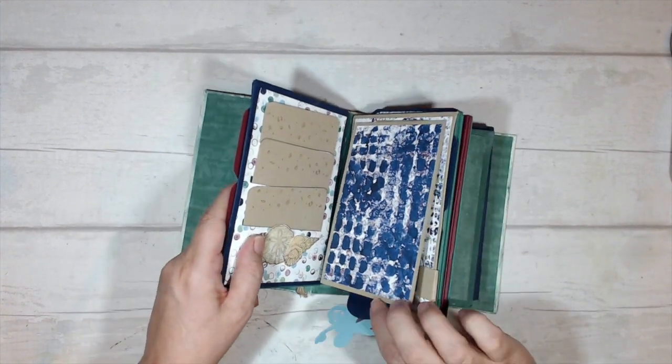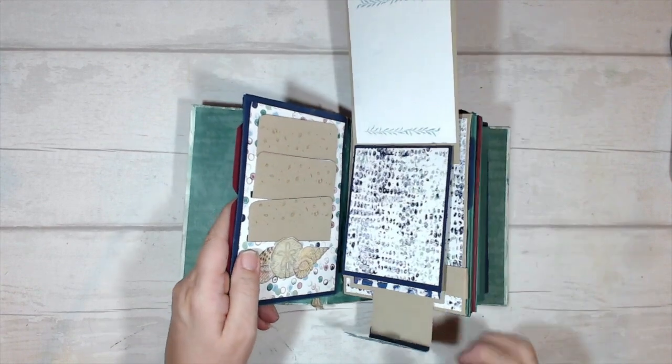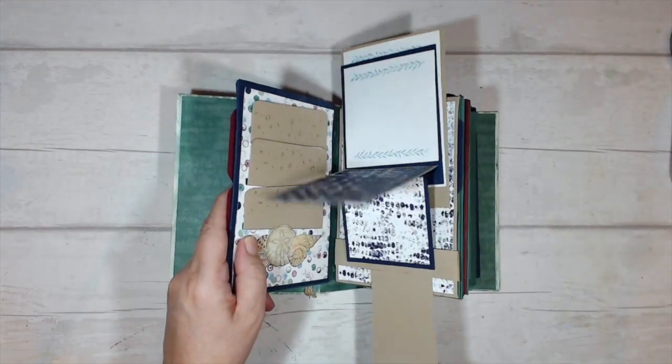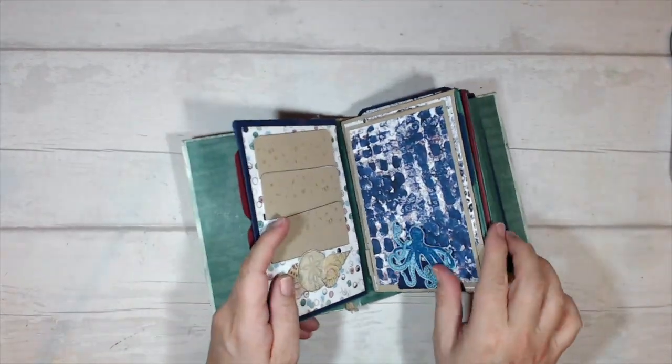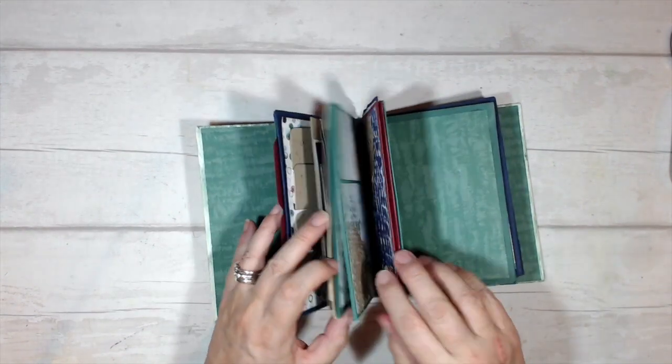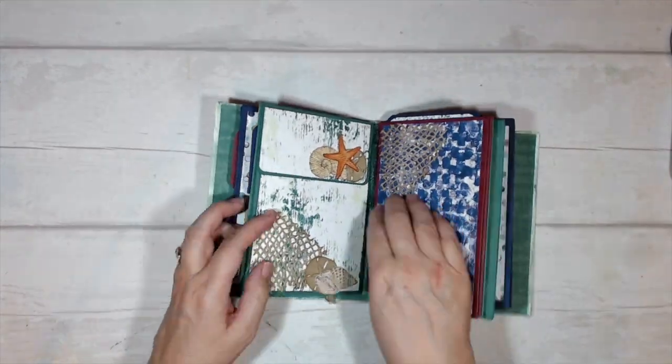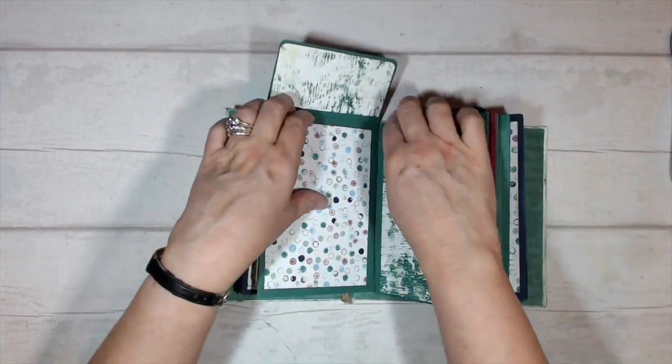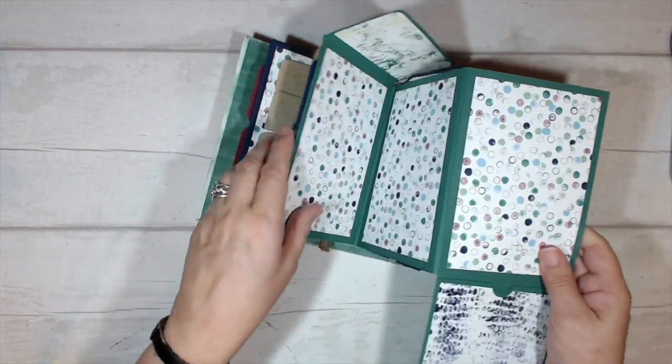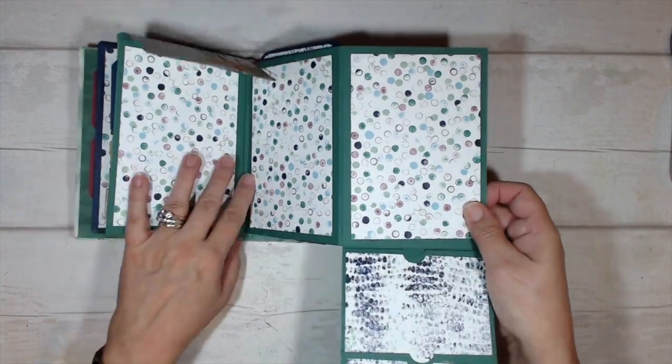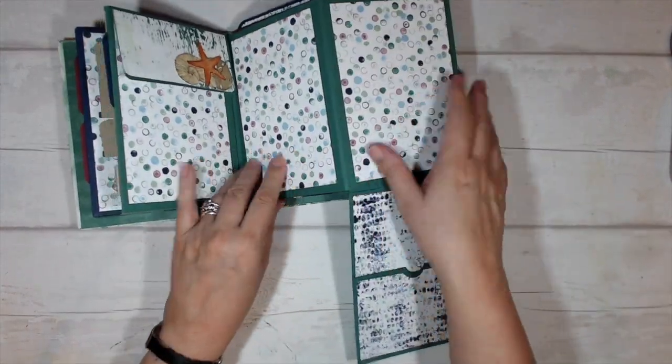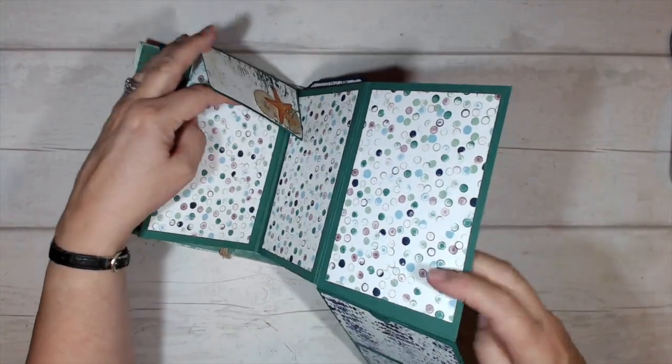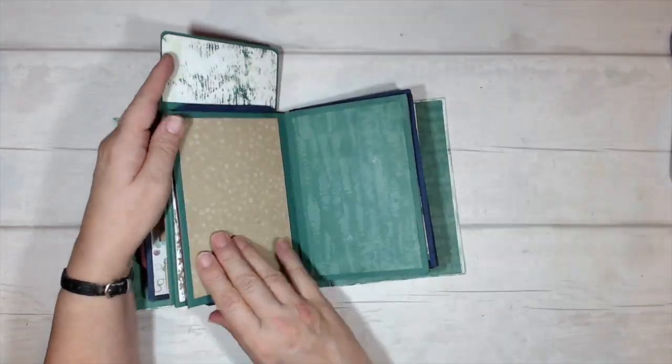And then there was this one, which is a waterfall type of page. And then you can see it's getting really full. This one closes with a magnet and there's loads and loads of space for pictures, for journaling, for cards. You know, you can do whatever you like with it.